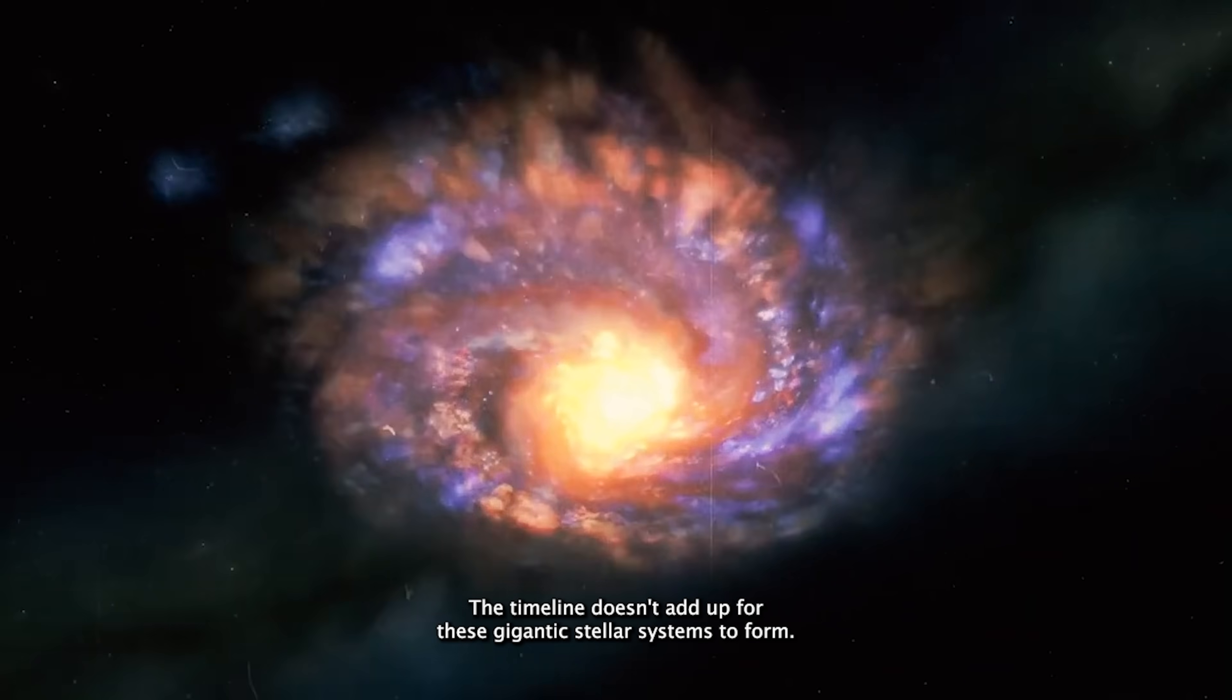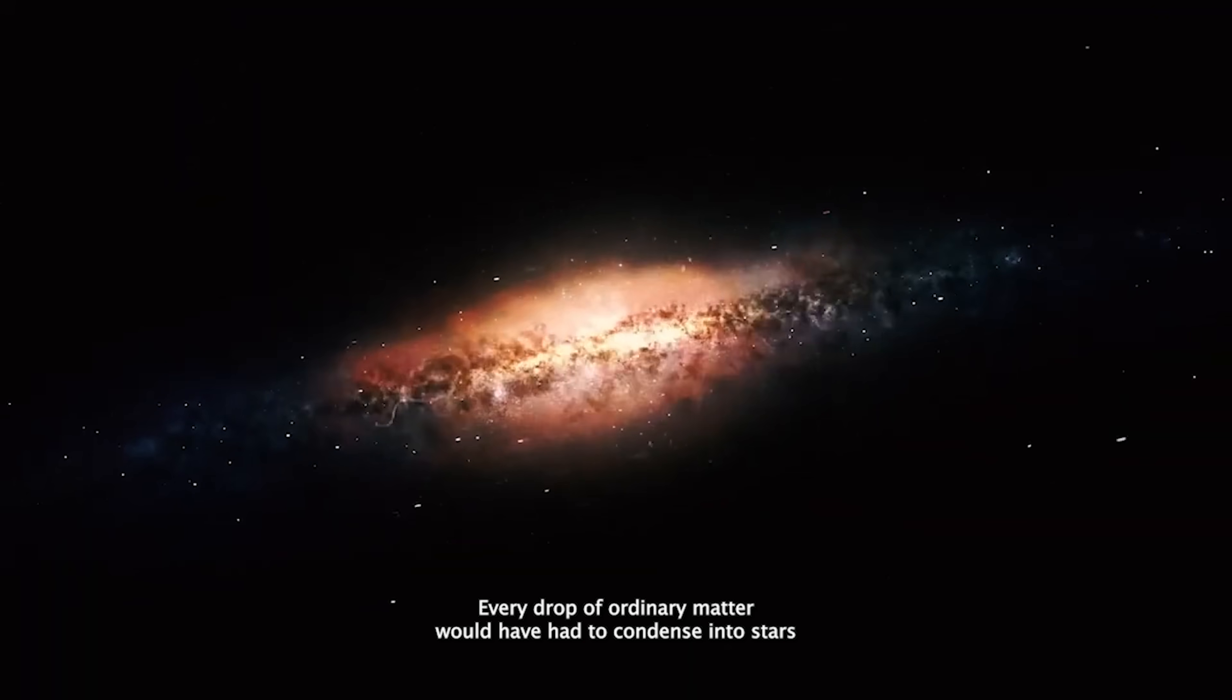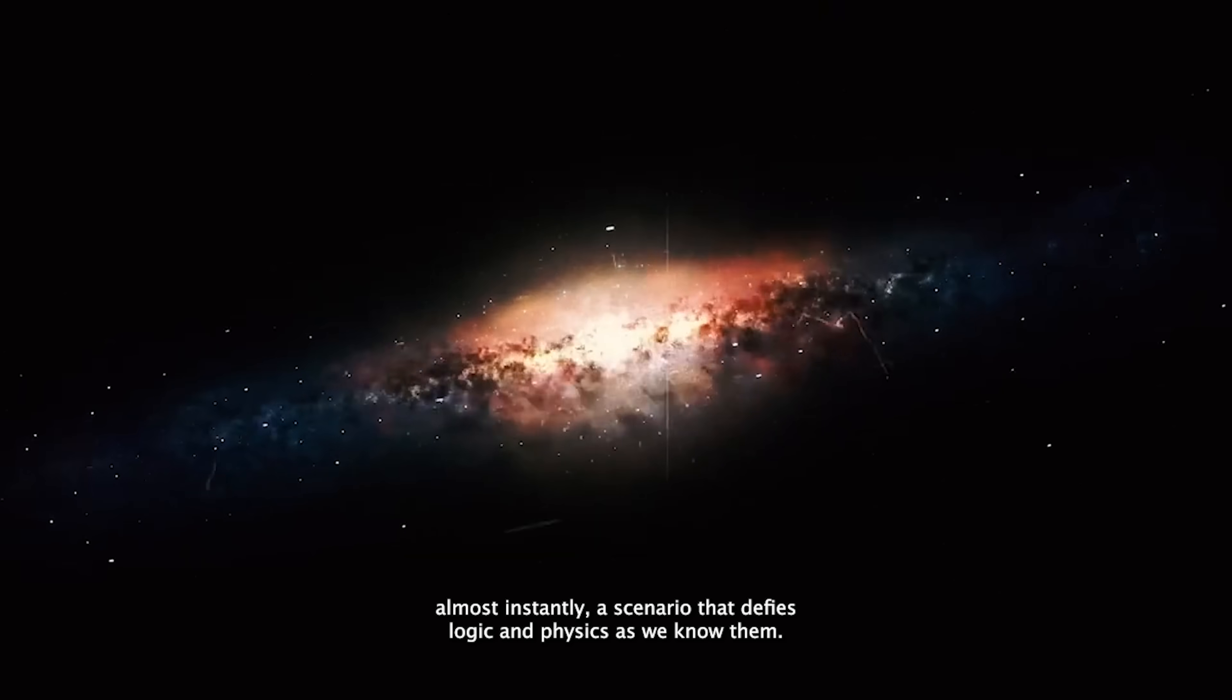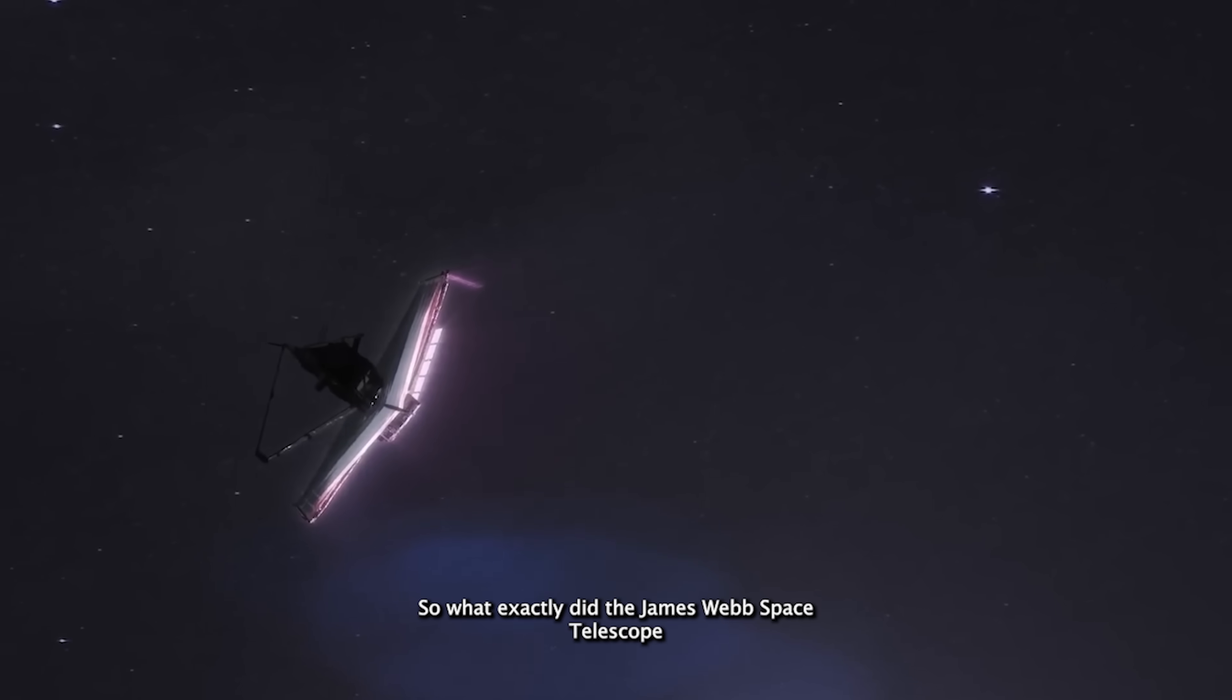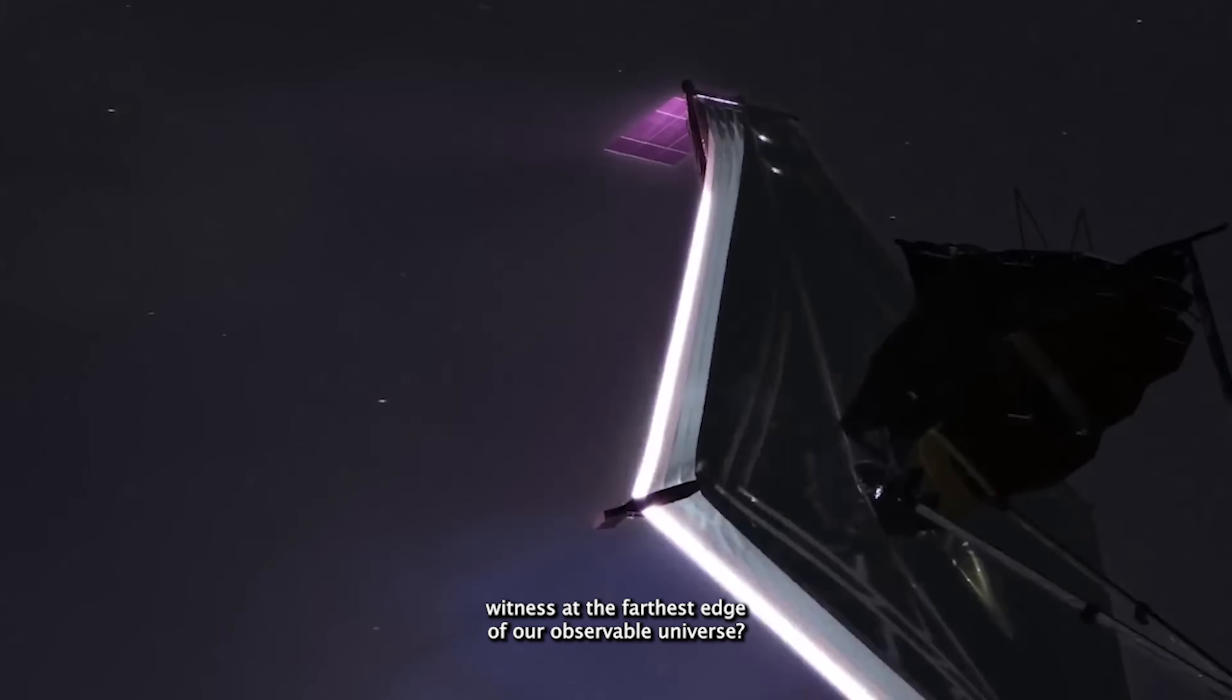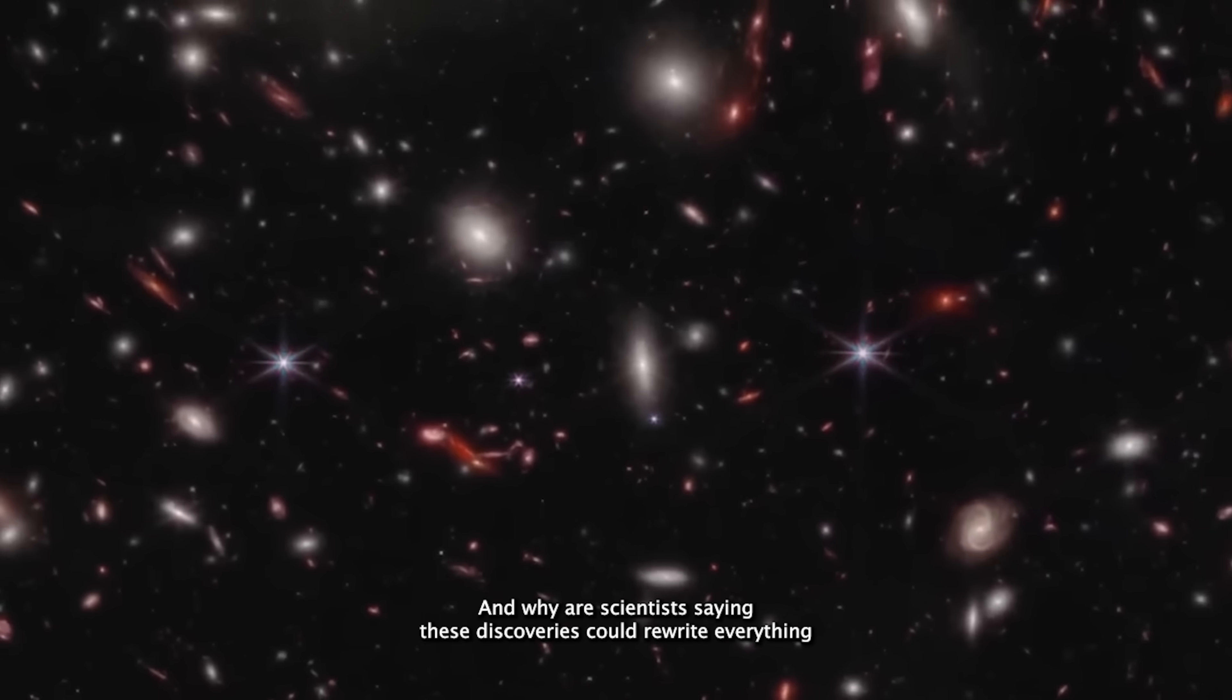The timeline doesn't add up. For these gigantic stellar systems to form, every drop of ordinary matter would have had to condense into stars almost instantly. A scenario that defies logic and physics as we know them. So what exactly did the James Webb Space Telescope witness at the farthest edge of our observable universe? And why are scientists saying these discoveries could rewrite everything?